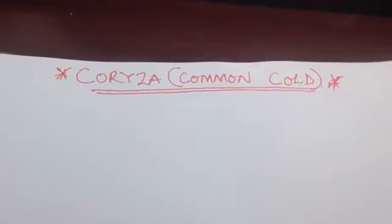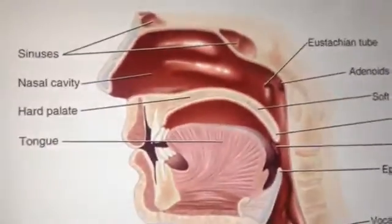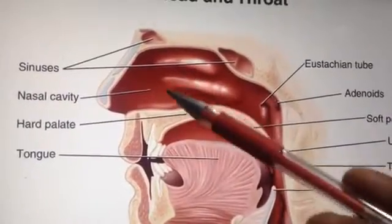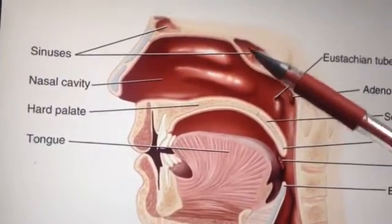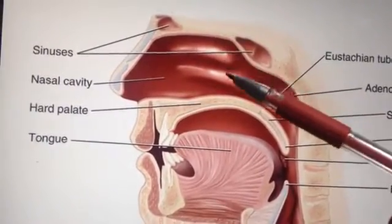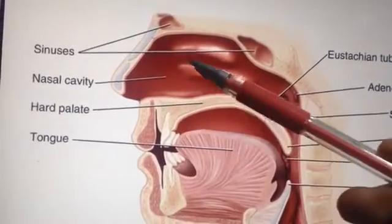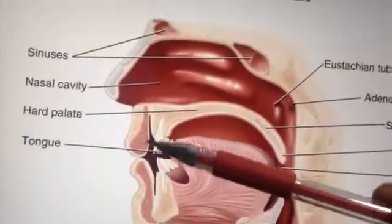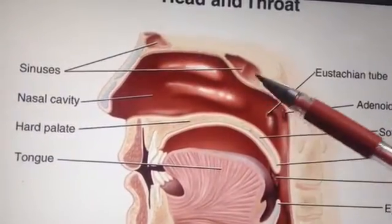Before we go further, we have to show the anatomical location where this virus affects in terms of common cold. This is the anatomy — we have the nasal cavity, the inside of the nose, the sinuses, and the nasal conchae. Any air you inhale has to pass through this and then down to your trachea.